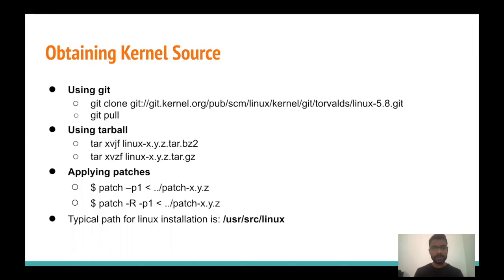To build a custom kernel we need its source code, so we can download the source code from the kernel.org website, or we can use a git clone command to download it. After downloading, we can unzip it with the tar command. If we want to change the version of the downloaded kernel, we can do that with a patch file — we apply a patch with the patch command using the -p1 option.